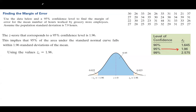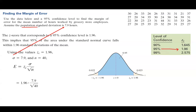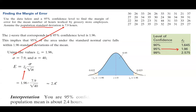Using this information, we can calculate the margin of error. We have sigma, n, and zc. The formula says e equals zc times sigma divided by the square root of n. So: zc is 1.96, sigma is 7.9 (given in the question), divided by the square root of 40. The margin of error is about 2.4 hours. We are 95% confident that the margin of error for the population mean is about 2.4 hours.